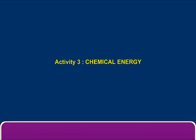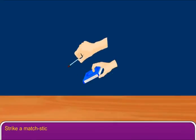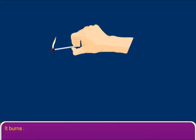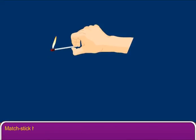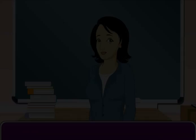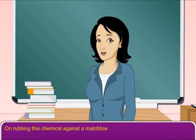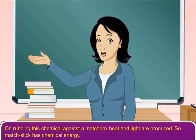Activity 3: Strike a matchstick against a matchbox. It burns and gives us heat and light. A matchstick has chemicals on its one end. On rubbing this chemical against a matchbox, heat and light are produced. So, the matchstick has chemical energy.